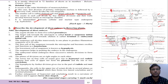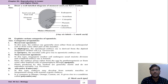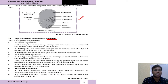Now let's draw a well-labeled diagram of a monocot seed. There are also various categories of apomixis — you can read it yourself; I will skip it. Let's now talk about the 4-mark questions.